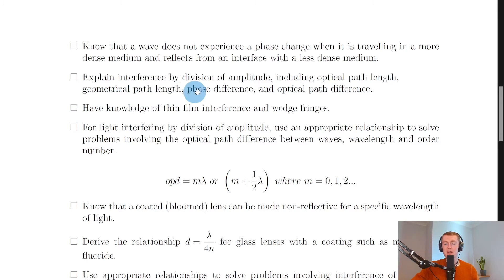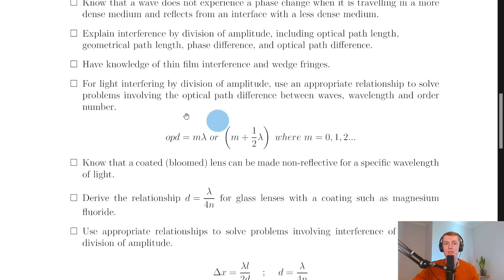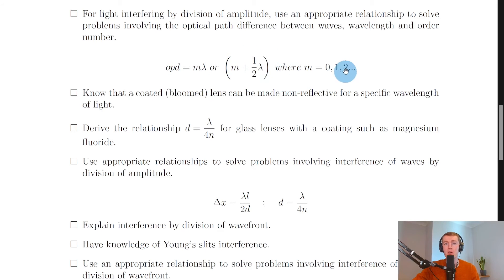You need to explain interference by division of amplitude, including optical path length, geometrical path length, phase difference, and optical path difference. You also need knowledge of thin film interference and wedge fringes as applications of division of amplitude. For light interfering by division of amplitude, OPD equals mλ for maxima or constructive interference, and OPD equals (m + ½)λ for minima or destructive interference, where m equals 0, 1, 2, and so on.